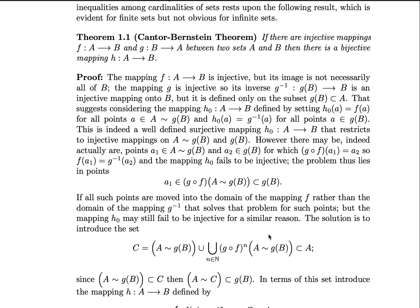So for the statement we have, if there are injective mappings f from A to B and g from B to A between any two sets A and B, then there must exist a bijective mapping h between those two sets A and B.